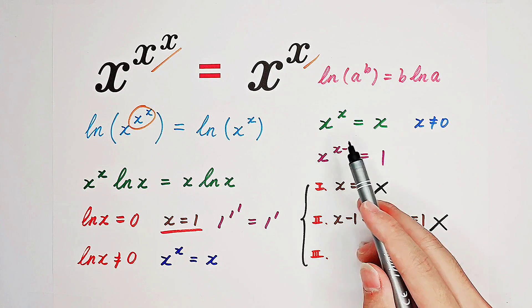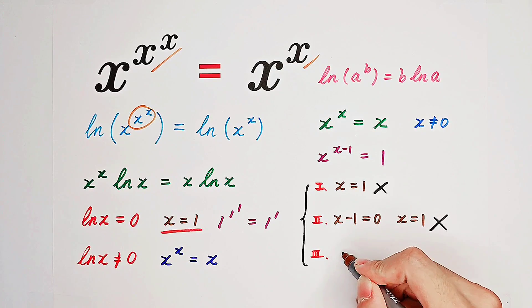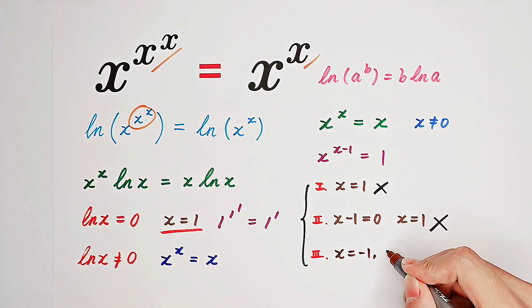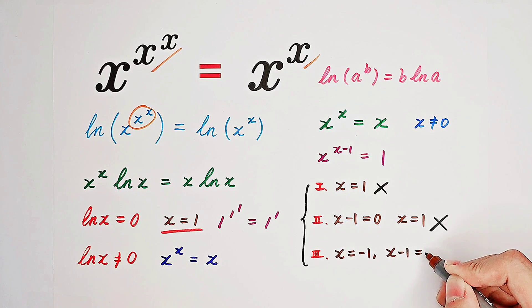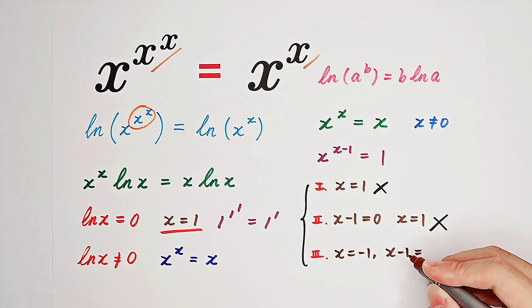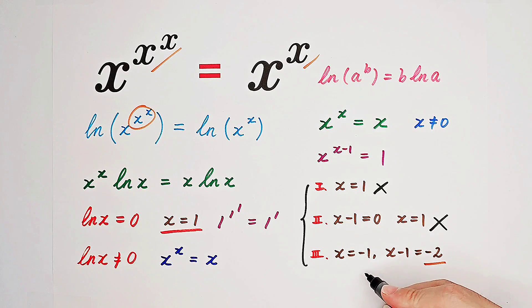Remember, the equation x to the power of x equals x is under the condition that natural log of x is not equal to zero. We also have our third case: x equals negative one. We have to check that the exponent is an even number. x minus one equals negative two, and negative two is two times negative one, which is an even integer. So x equals negative one is also a solution.